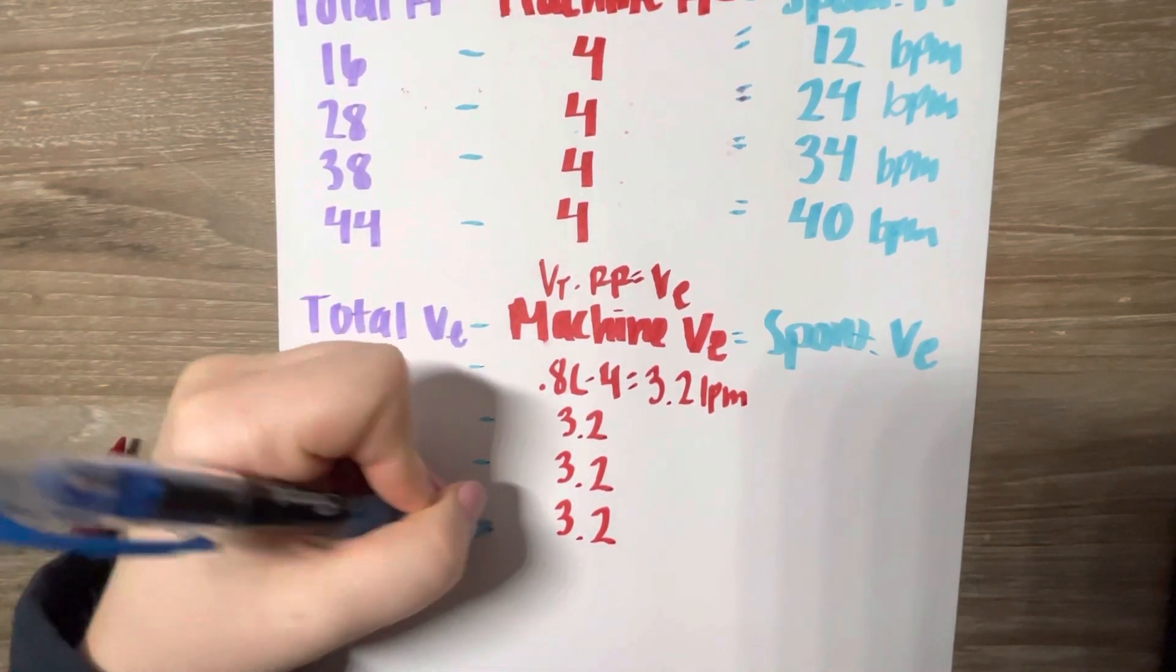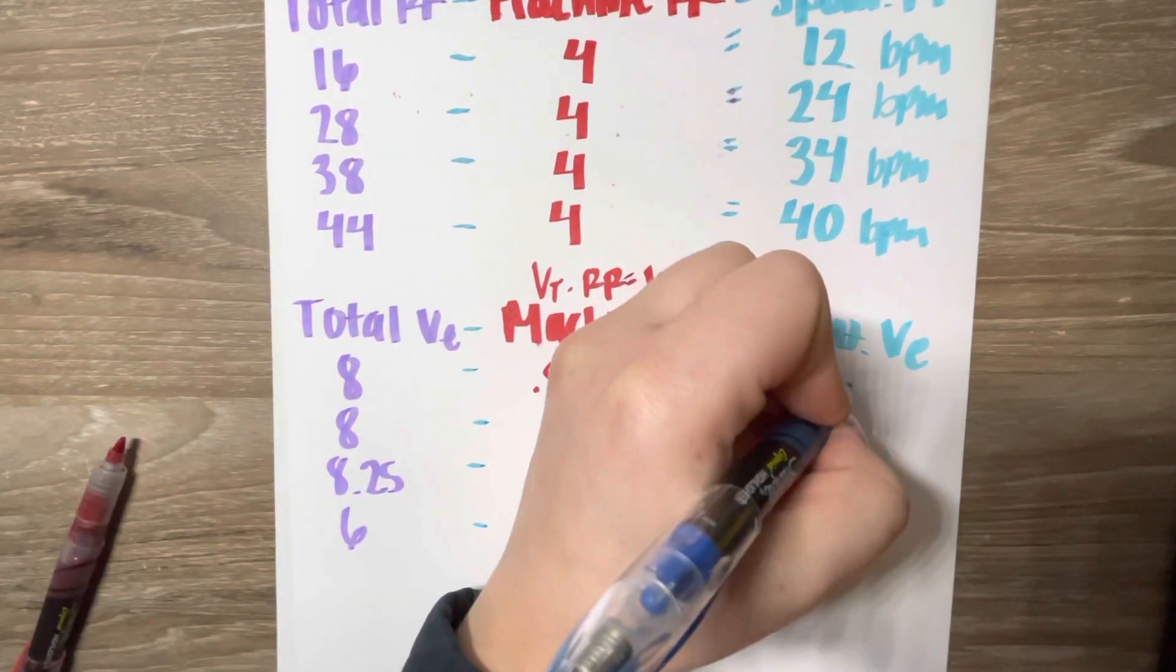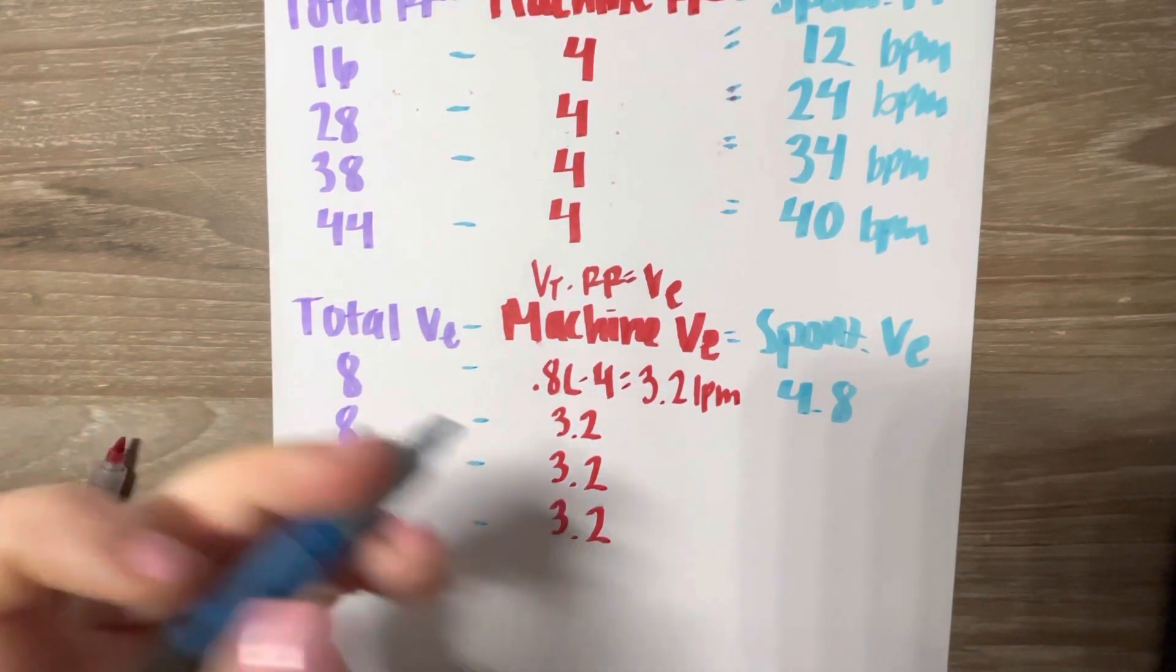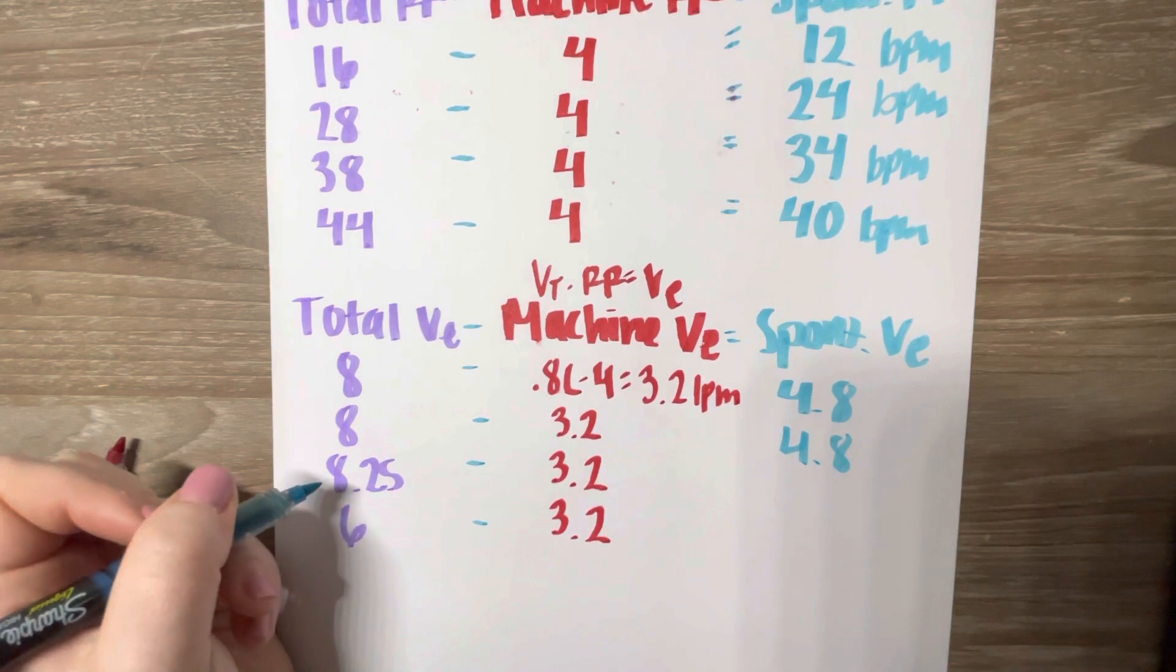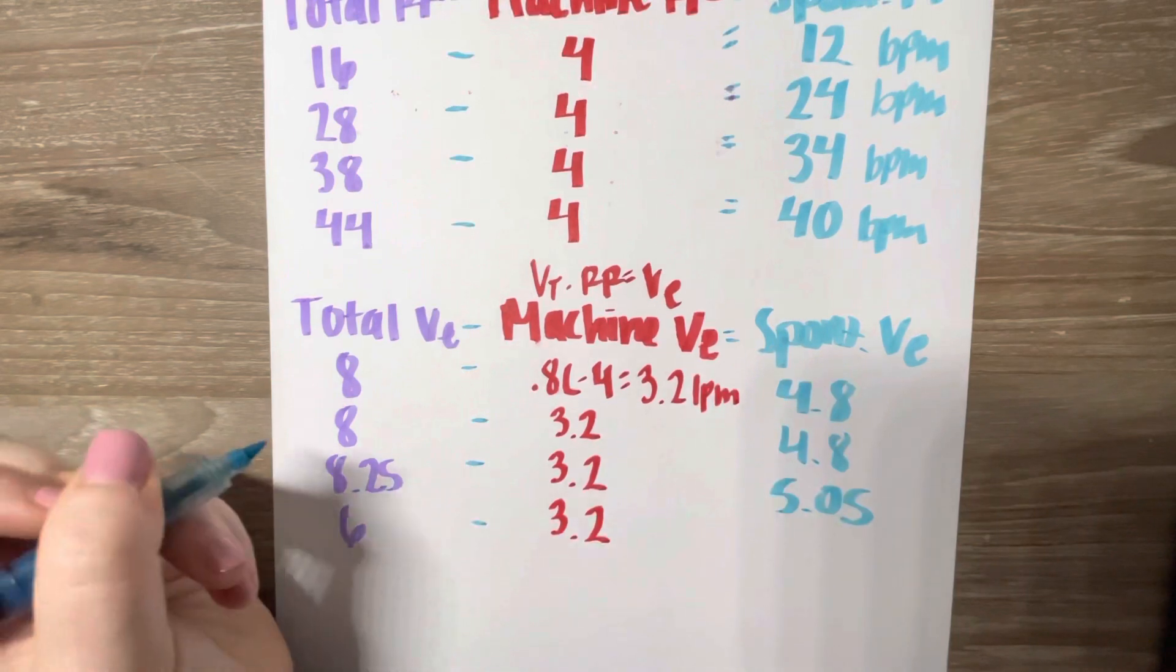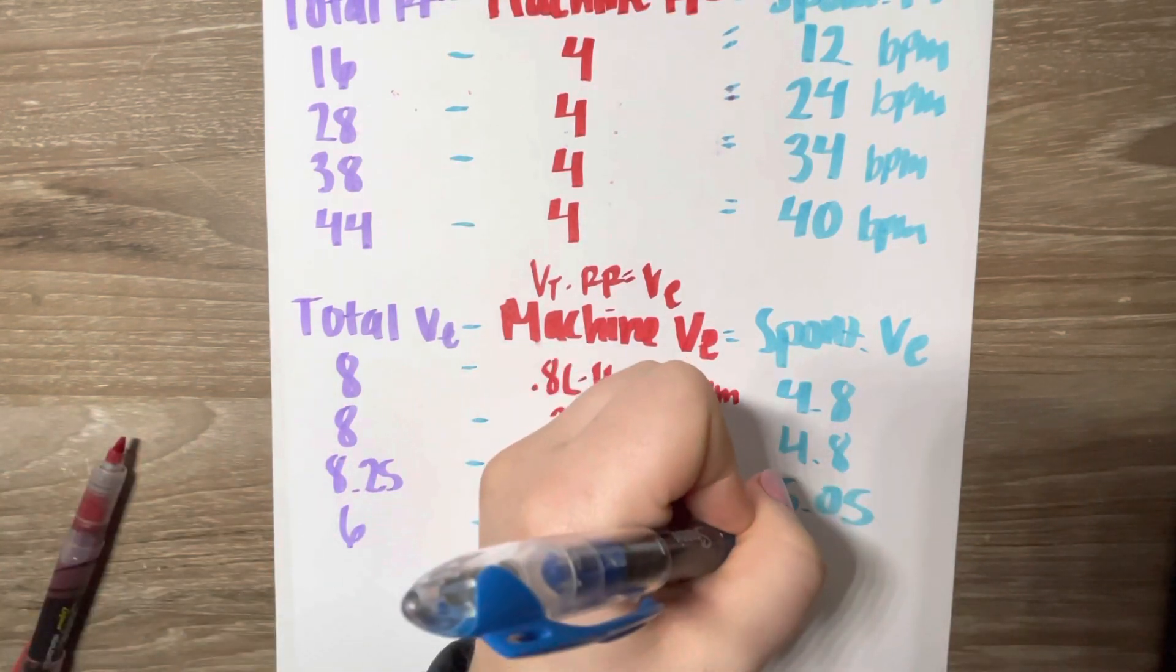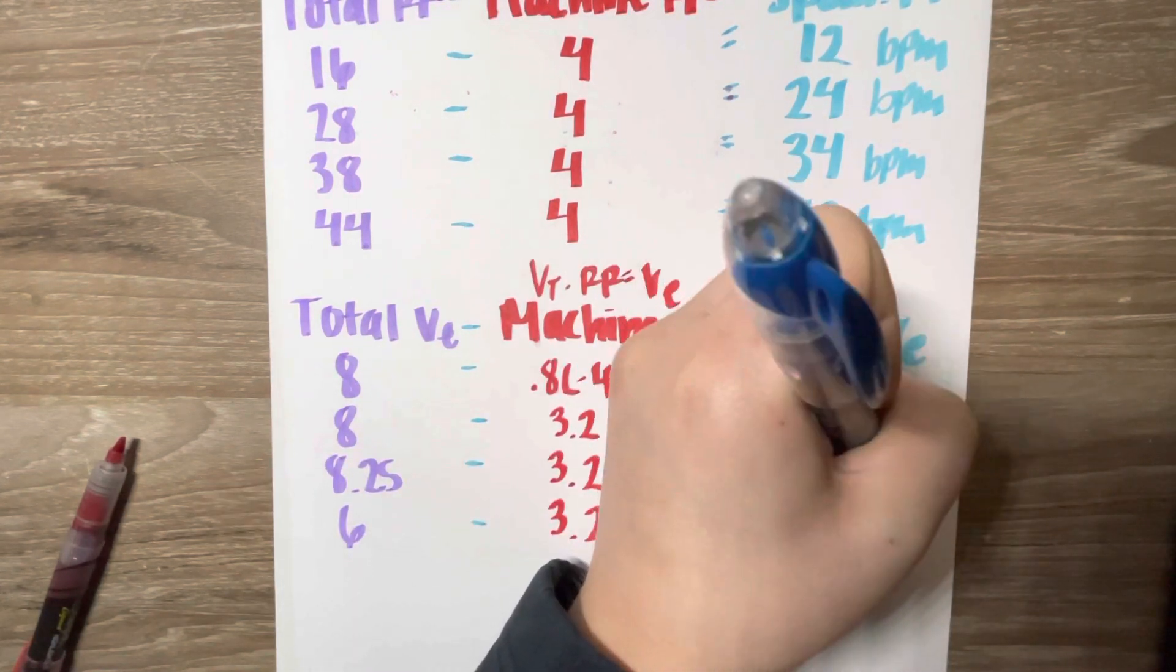So I just threw these numbers in my calculator. I got 4.8 for the first one. 8 minus 3.2 is still 4.8. 8.25 minus 3.2 is 5.05. And lastly, 6 minus 3.2 is 2.8 liters per minute.